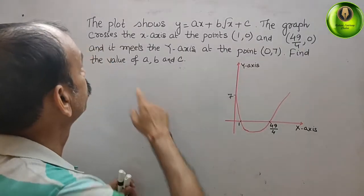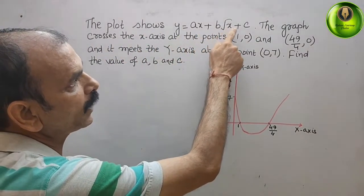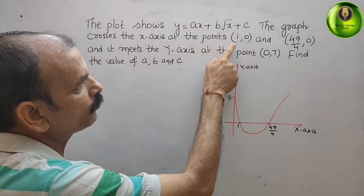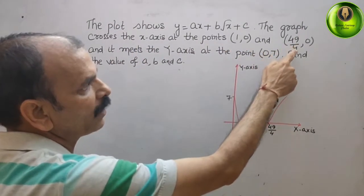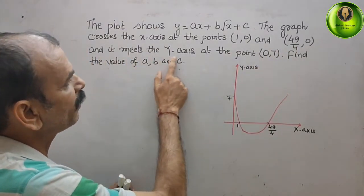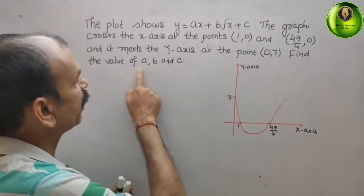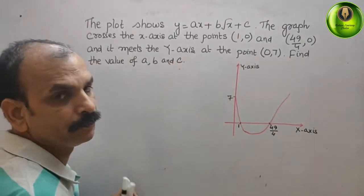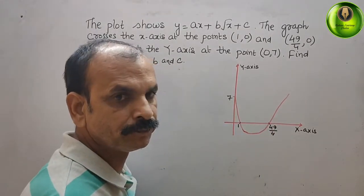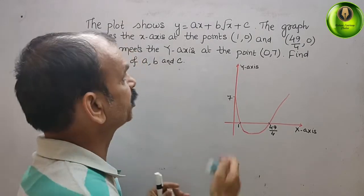The question states: the plot shows y = ax + b√x + c. The graph crosses the x-axis at points (1, 0) and (49/4, 0), and meets the y-axis at the point (0, 7). Find the values of a, b, and c. Now, what we have to do first is write the equation.